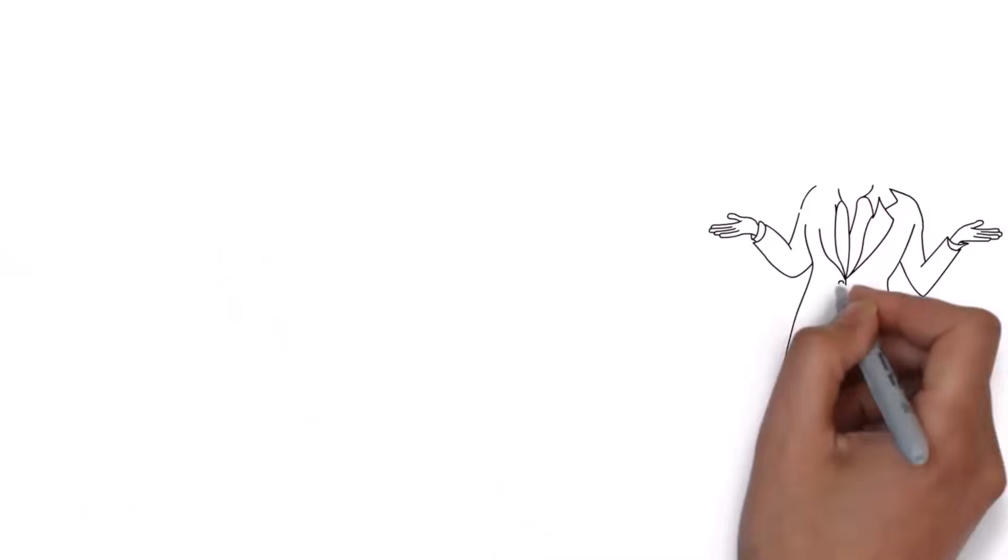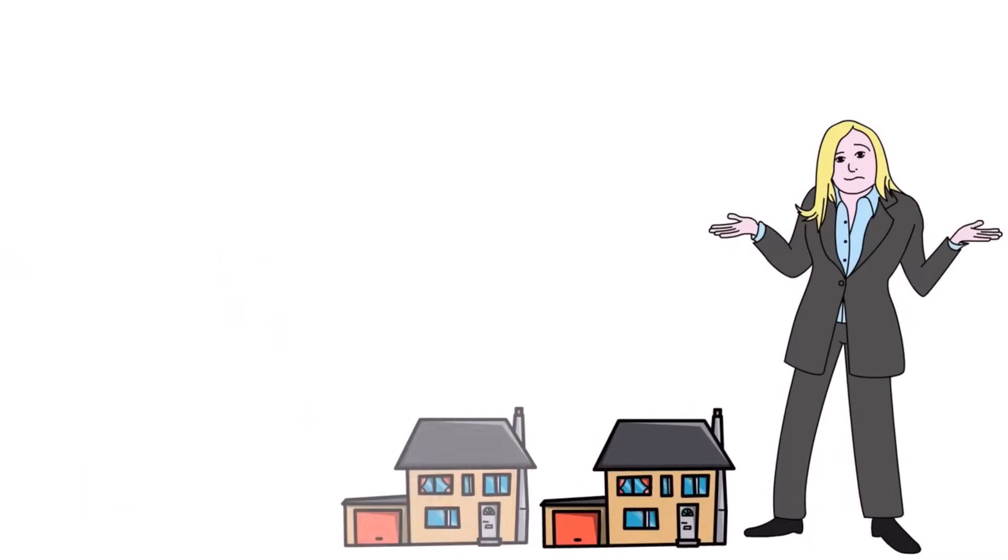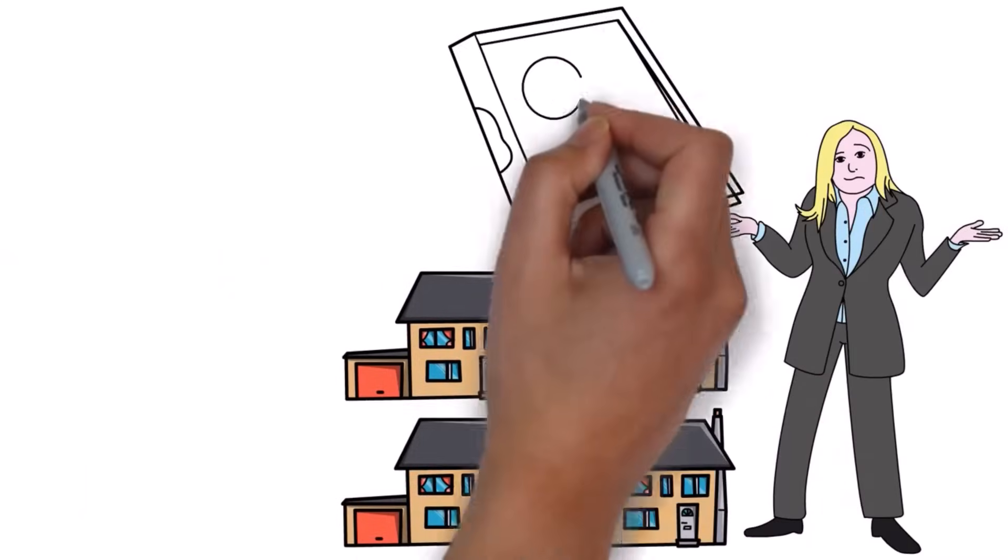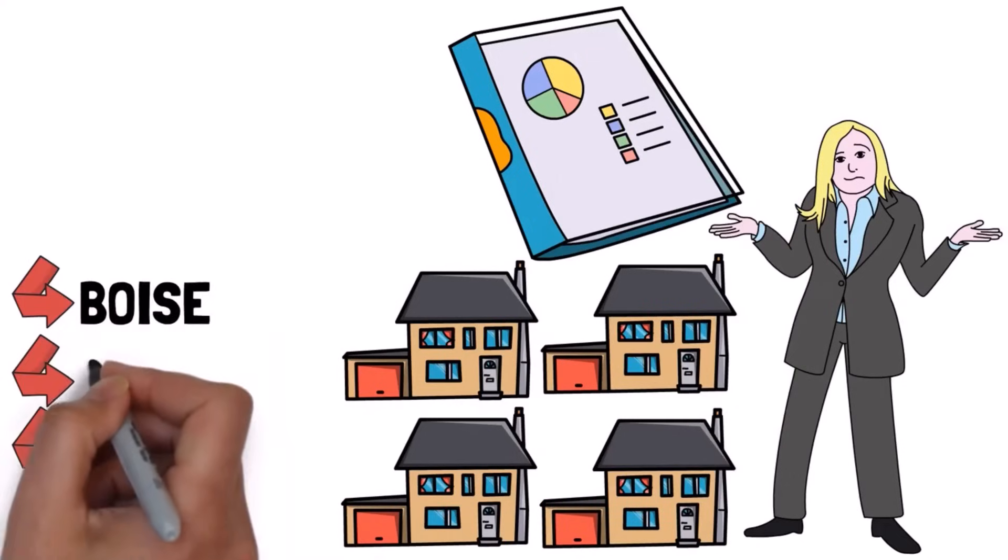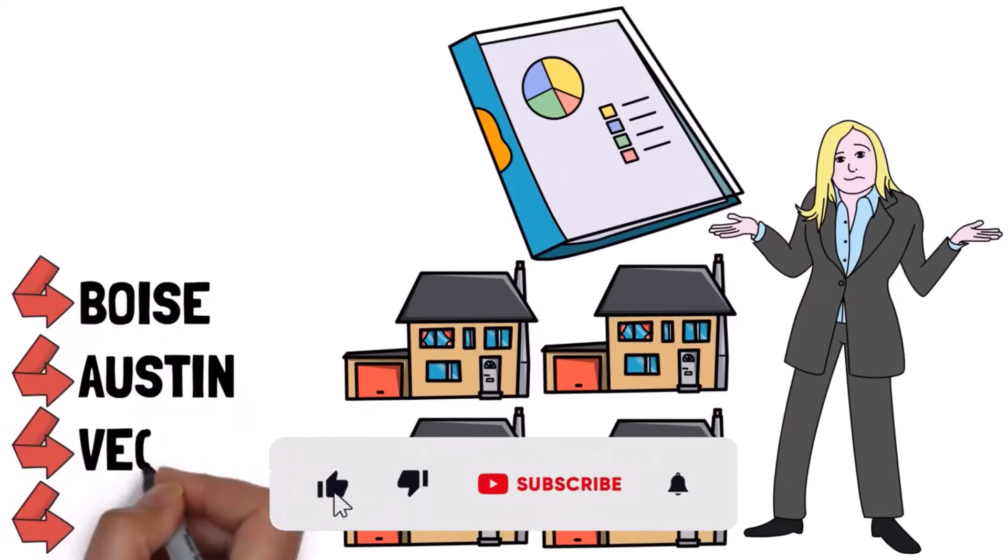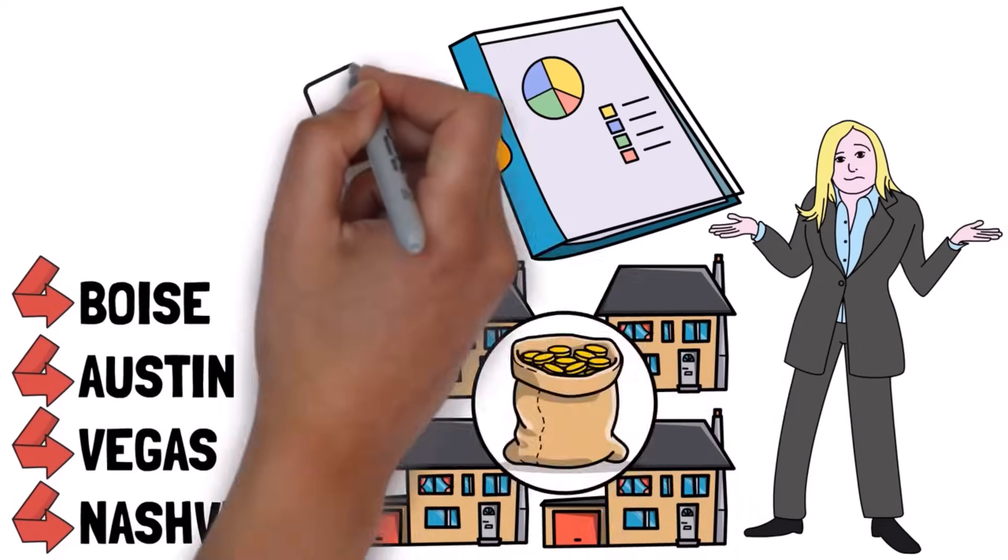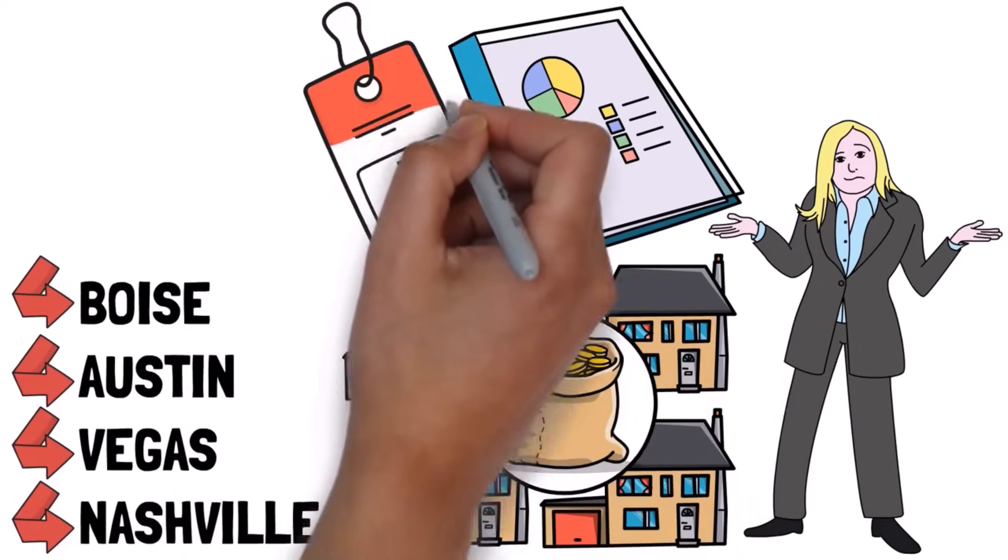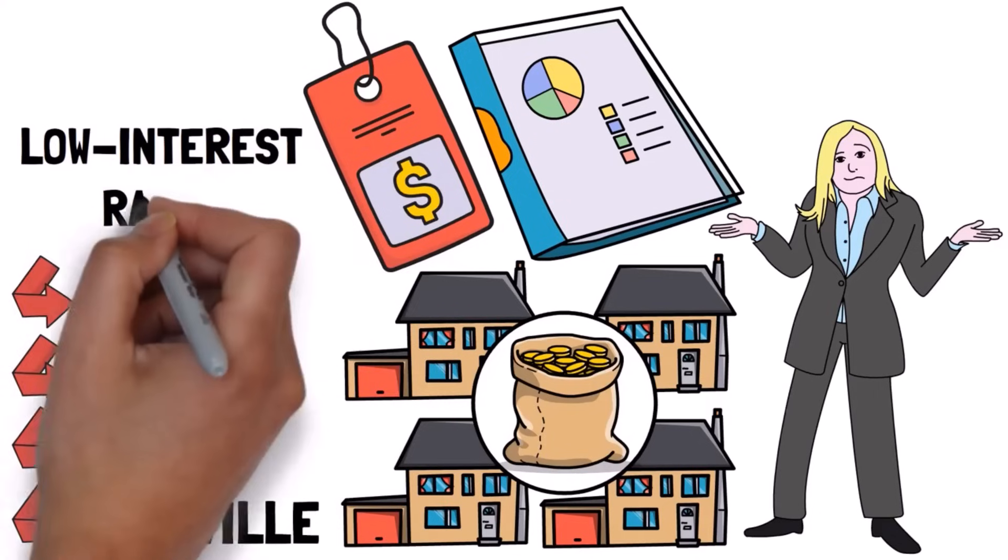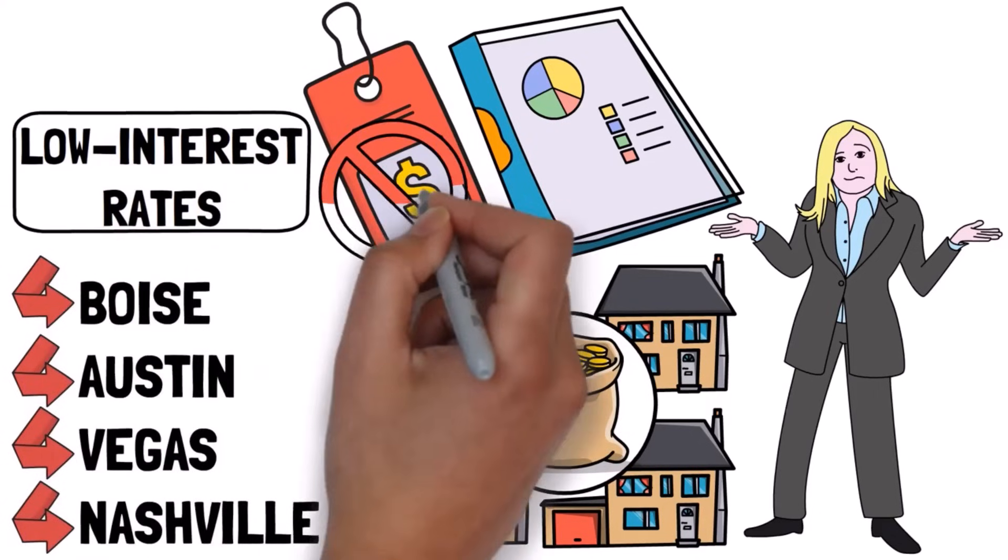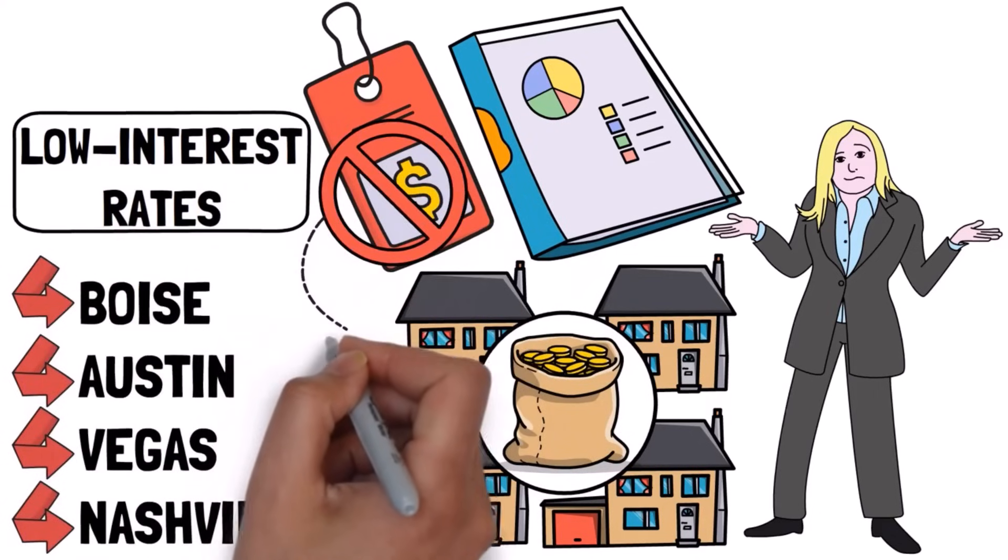Let's talk about something important. There are a lot of new homes that are not being talked about in the reports or data. This is happening in many places like Boise, Austin, Vegas, and Nashville. In simple terms, we're going to have a flood of expensive new homes on the market soon. This is not the same as people selling their homes because they got low interest rates. They won't give up their cheap mortgages for more expensive ones.